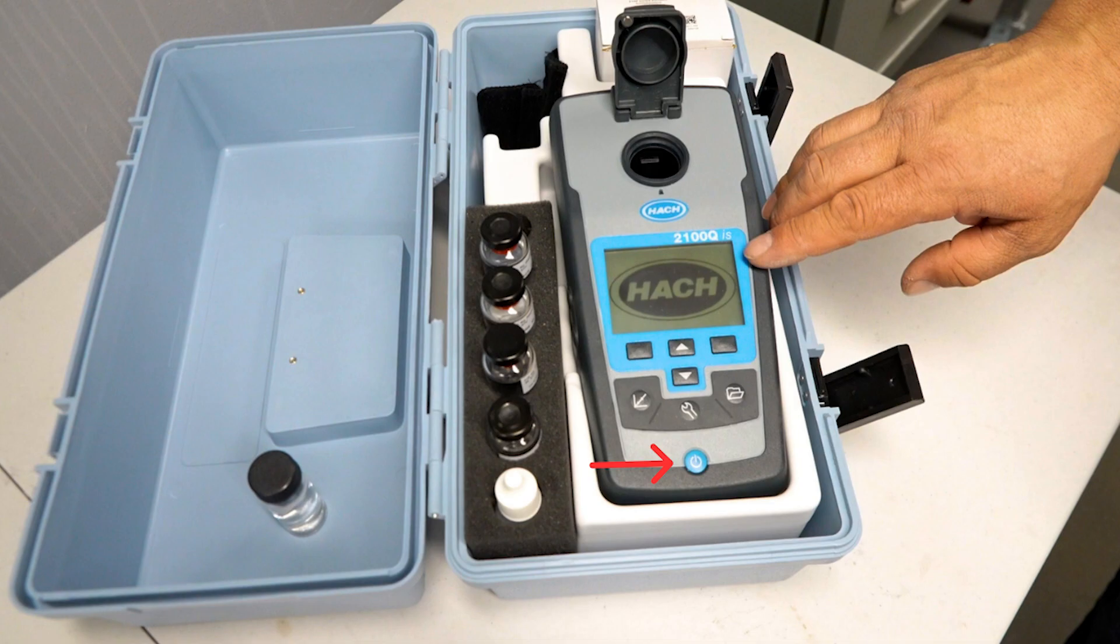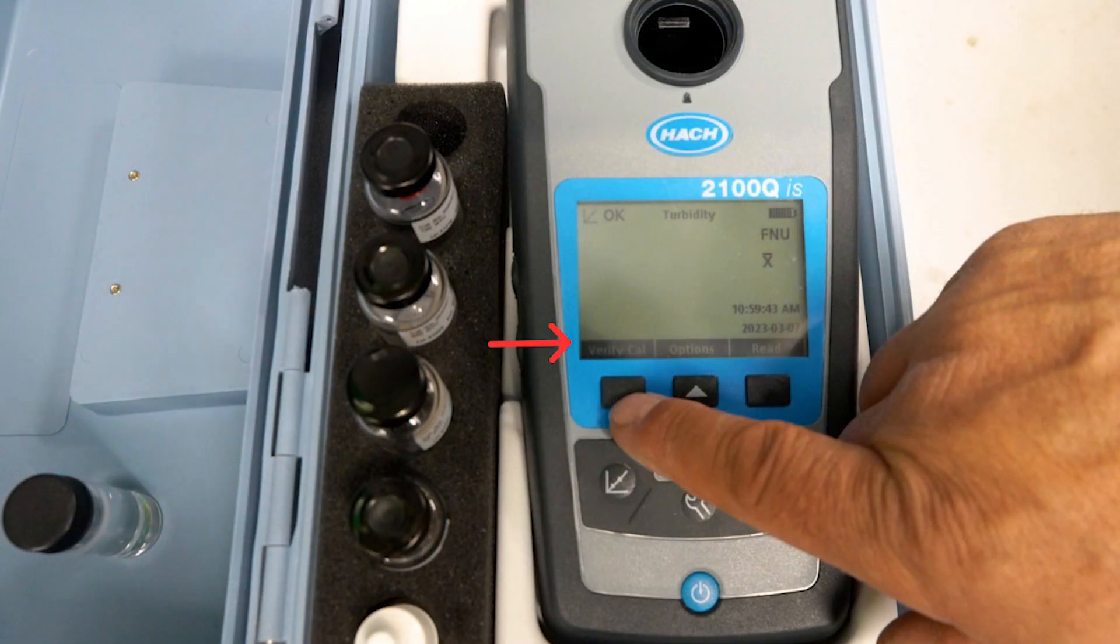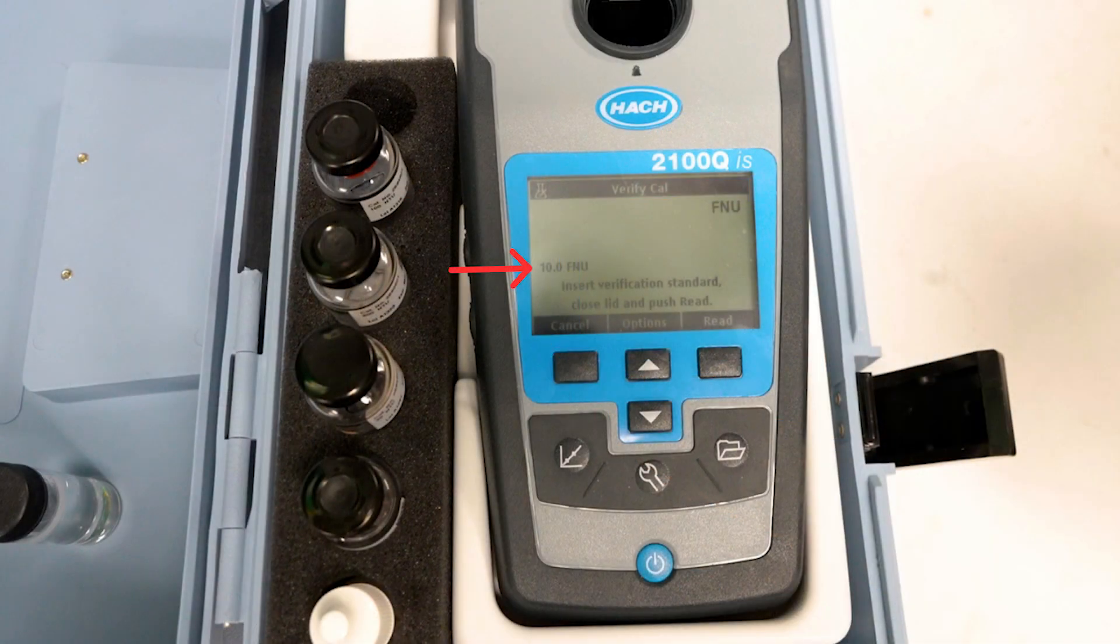So first of all we've got to turn the power on, and before we do a calibration we do verify calibration. So we hit this button, and then it asks to put in the 10 FNU, which is the American version of NTU. So when you're ordering these things make sure you get the metric or the imperial readings for them.